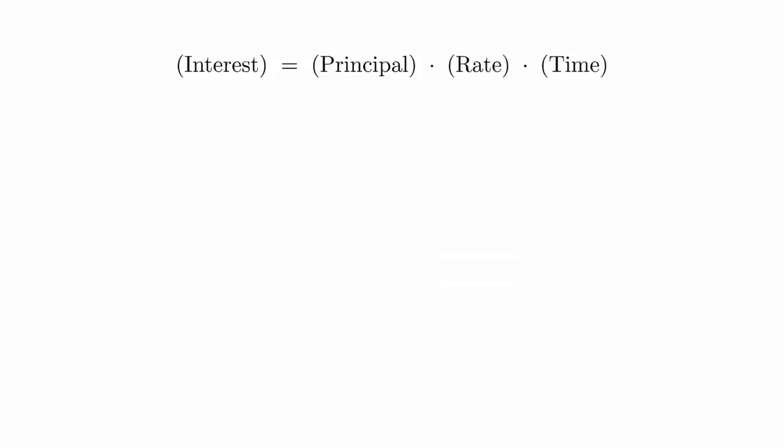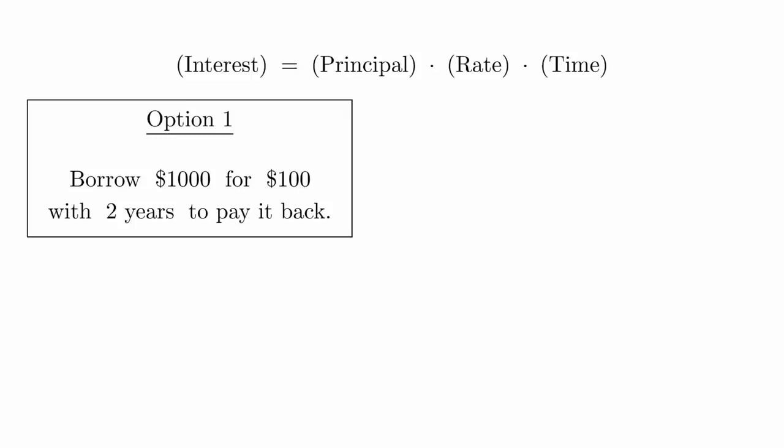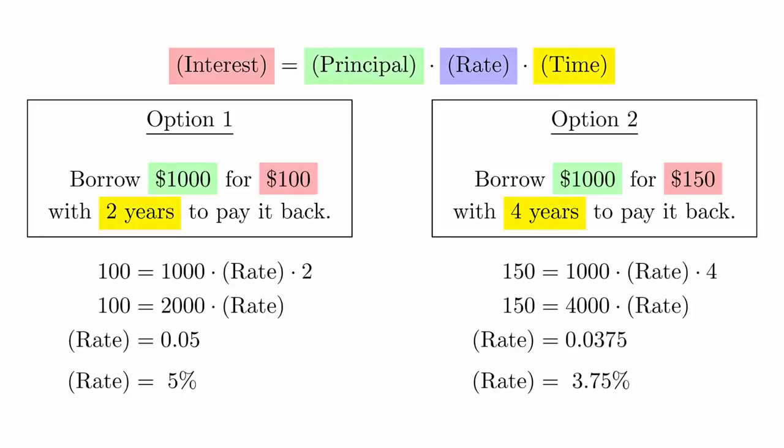Let's say you want to borrow $1,000 and you have a choice of two loan options. Option 1: it will cost you $100 to borrow the money and you have 2 years to pay it back. Option 2: it will cost you $150 to borrow the money and you will have 4 years to pay it back. Let's calculate the annual interest rate for both scenarios. We can see that Option 1 has a higher interest rate than Option 2, but the actual amount paid in interest is lower.